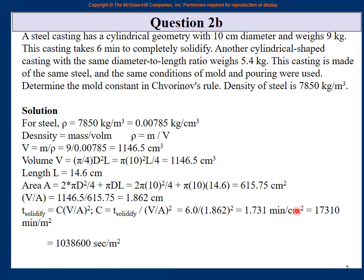The answer for C is in minutes per cm², since solidification time was given as 6 minutes and dimensions are in centimeters. You can convert to seconds per m² if preferred. Notably, the data for the second casting is just there to confuse — it is not actually needed to solve the problem.